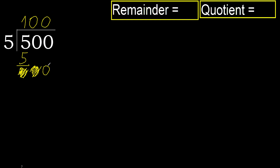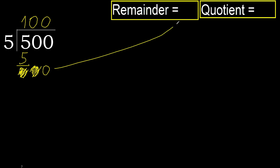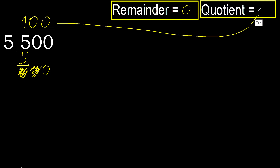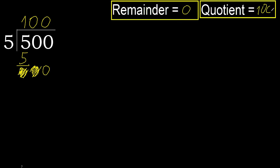Complete, because here finish it with this number. 500 divided by 5 is 100.